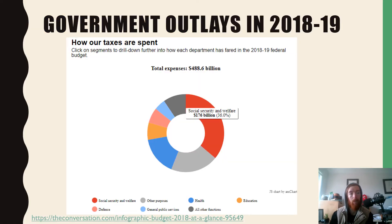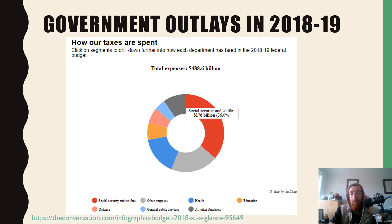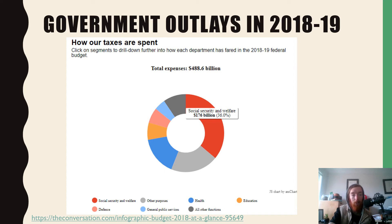Looking at government outlays in 2018–2019, 36% of all government spending went to social security and welfare — that's $176 billion out of a total $488.6 billion spend. So you can see that social security and welfare is by far the largest single area of government spending.